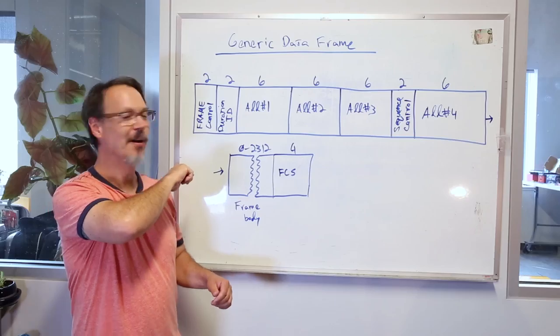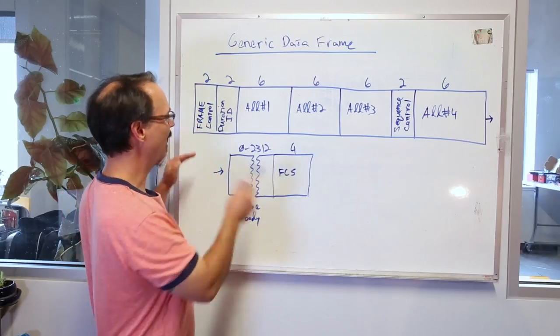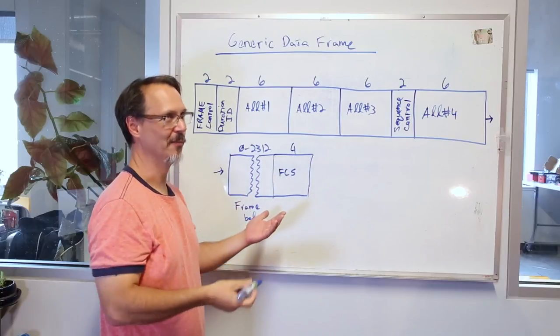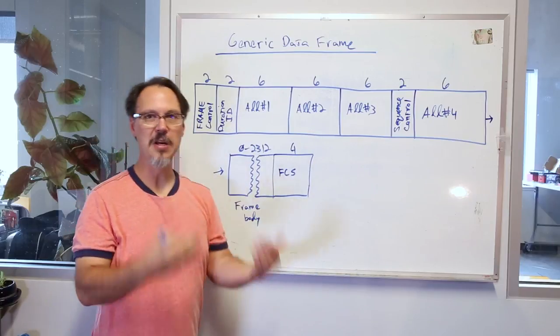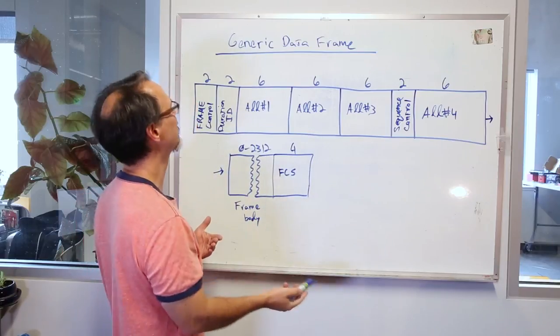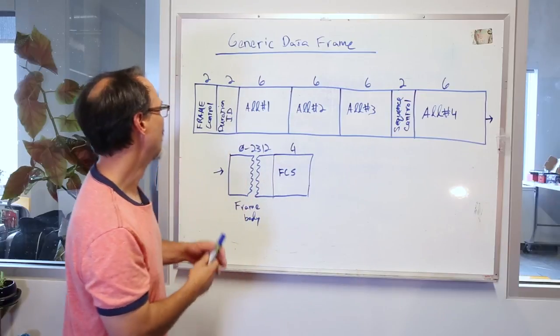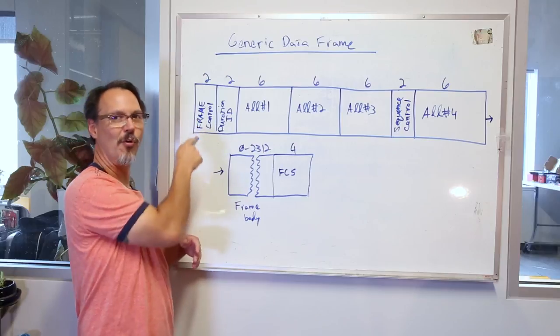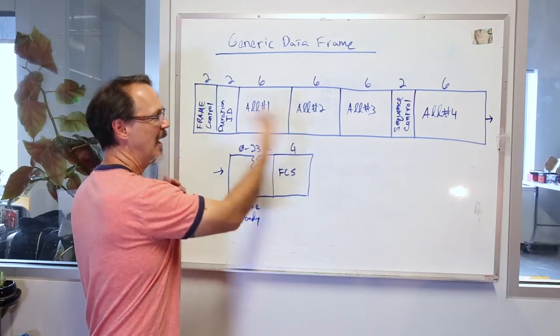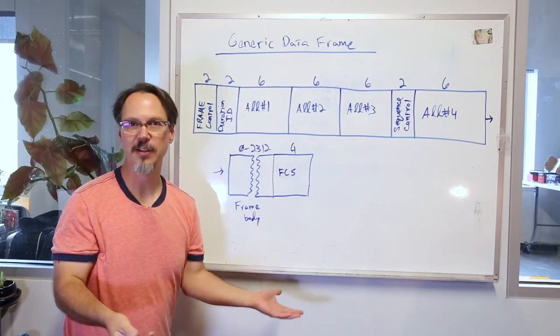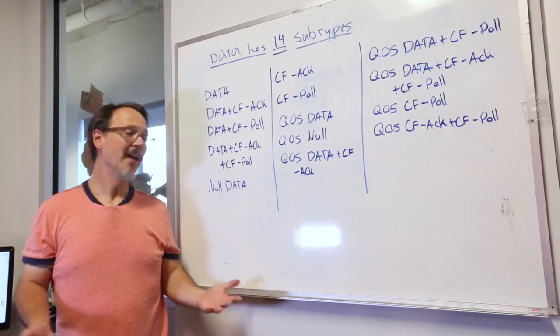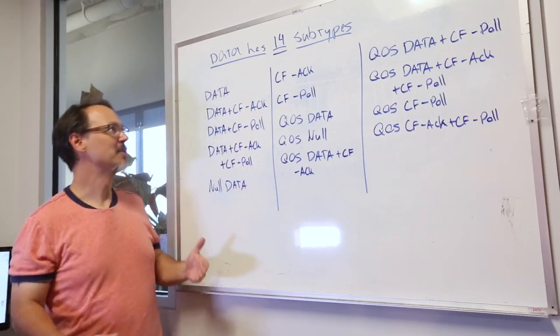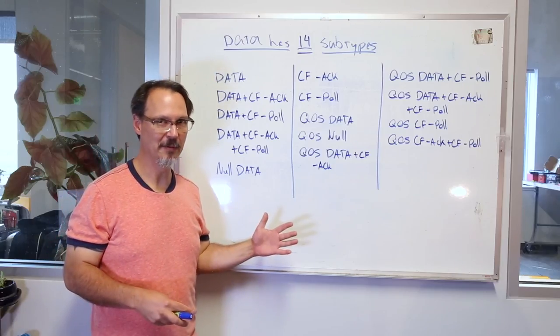Now the thing you need to know is that any one of these fields or various bits within them potentially can have different meaning and different function within the scope of a data frame based on the bits that occur in the frame control field. So they can mean different things. All that said, there are actually 14 subtypes of data frames. Might be a 15th. I'm not sure. I had a typo.